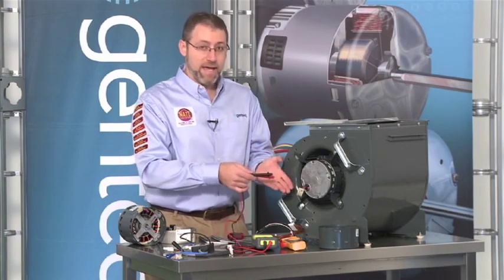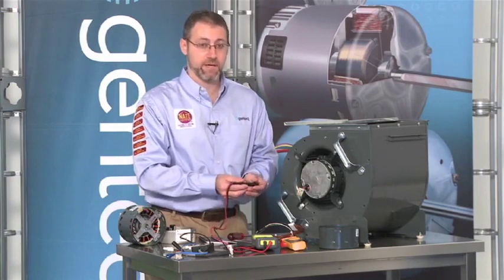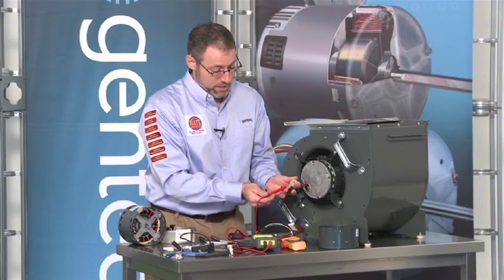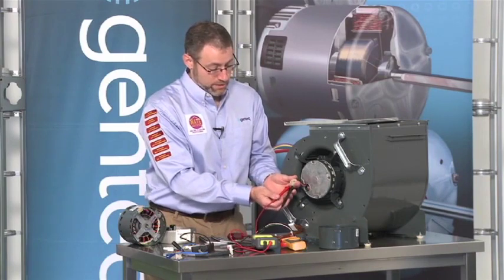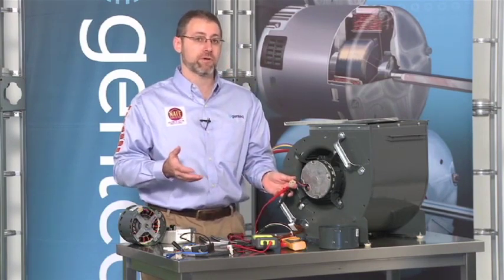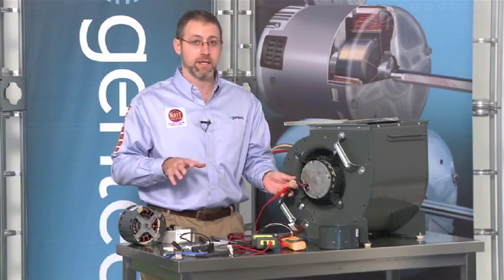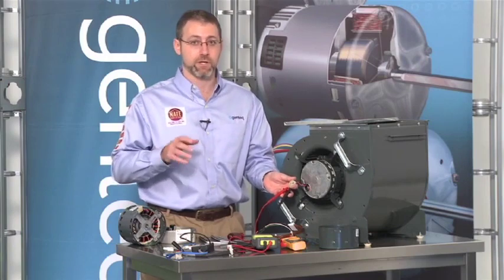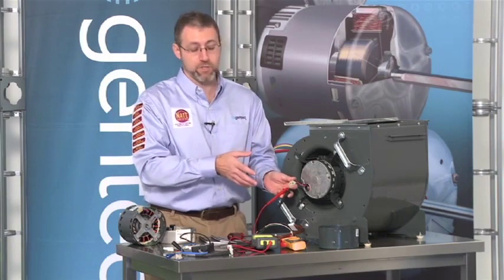So if it passes this test, the next test is the phase-to-phase test. This is where we're going to check the windings themselves to make sure they are reading the proper amount of ohms. Now, all of our motors are going to read 20 ohms or less. We don't make any ECM motors, one-third through one horse, that read more than 20 ohms. So if you read more than 20 ohms, that's a bad motor right off the bat.